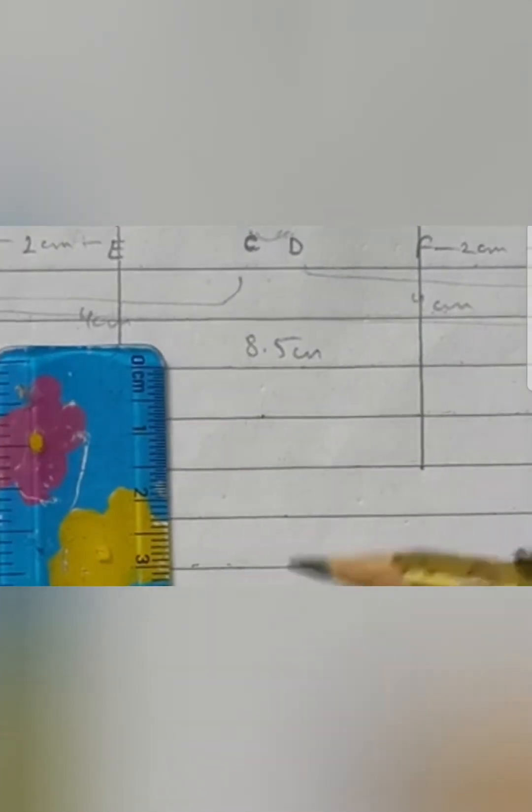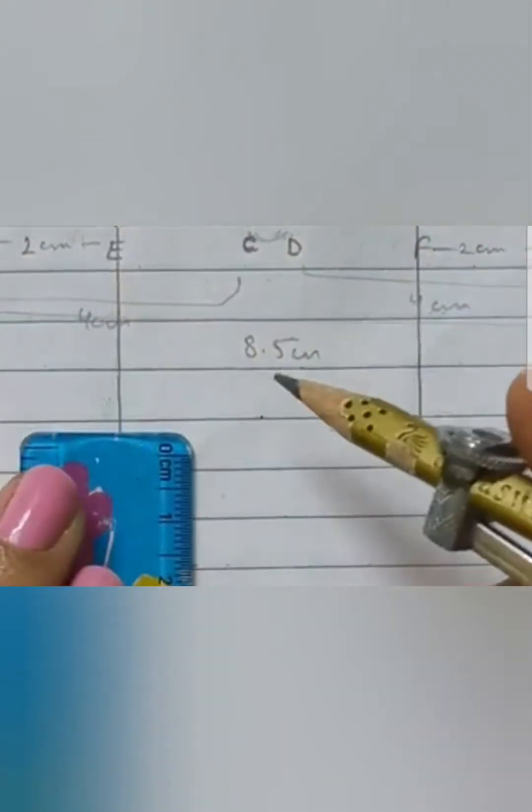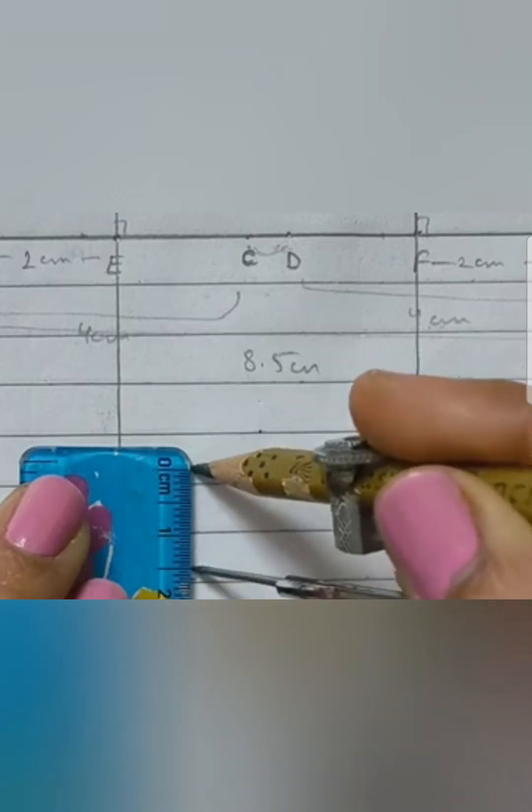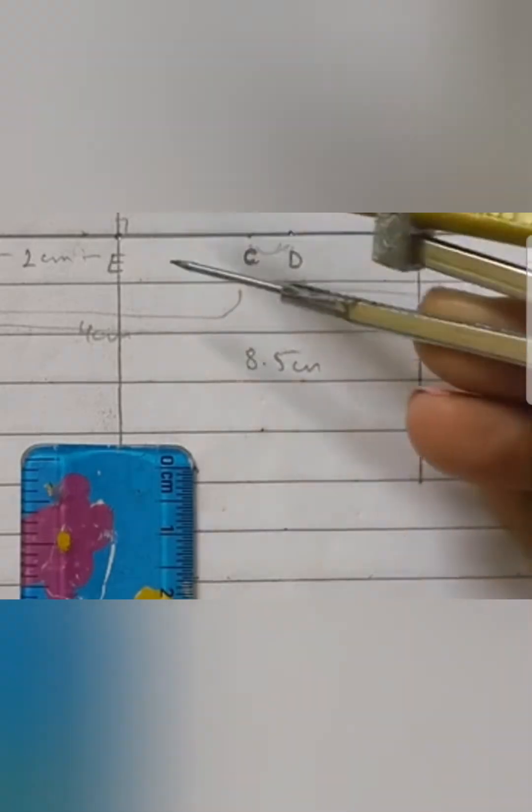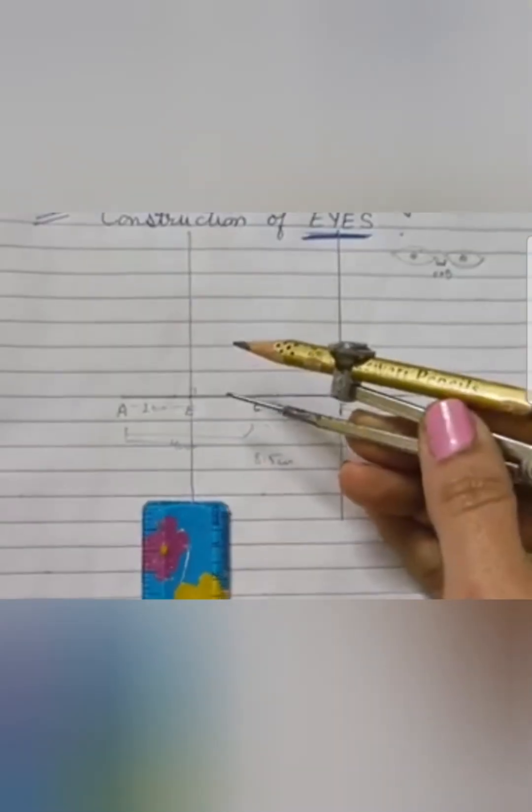Now to draw the eyes, let me take the radius in the compass as 1.5 centimeters. With E as center and radius 1.5 centimeters, I am going to draw an arc above and below the perpendicular line, and the same with point F. Now let's name it as G, H, I, J.